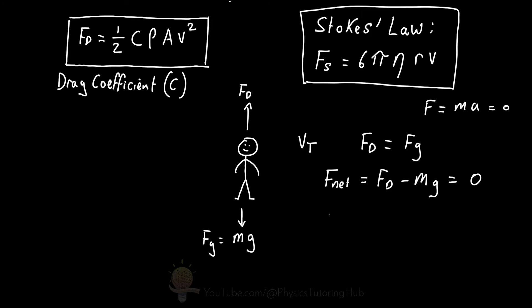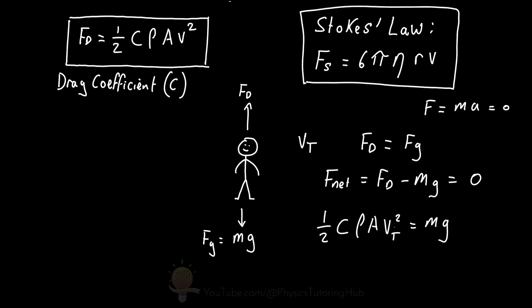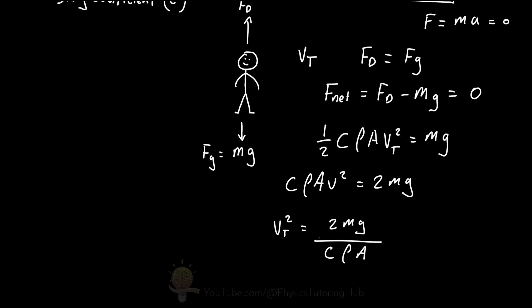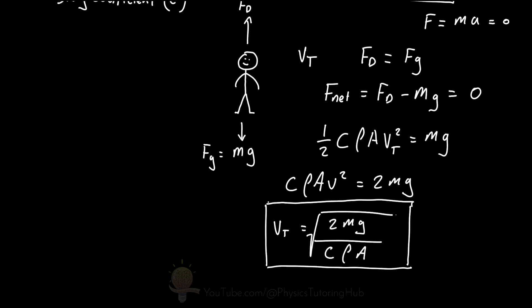This means that one half multiplied by the drag coefficient, the density of air, the surface area, and the skydiver's velocity squared is equal to the skydiver's weight. This only occurs when the velocity term is at terminal velocity — the maximum velocity for this skydiver. We can rearrange this equation to solve for terminal velocity by multiplying both sides by two, dividing both sides by the drag coefficient times density times area, and taking the square root.